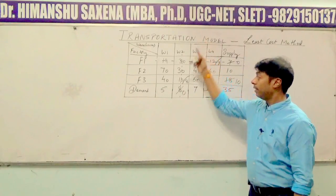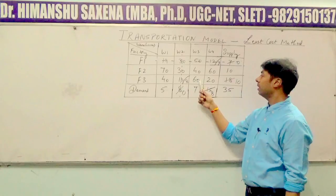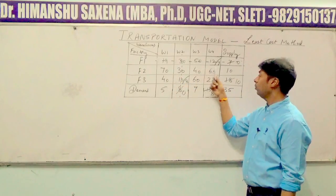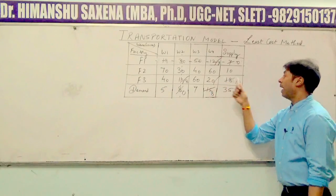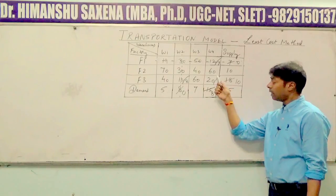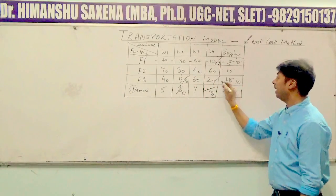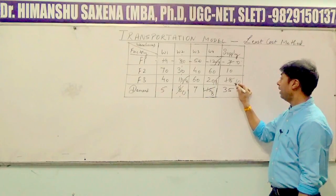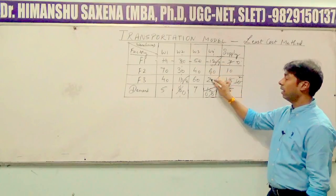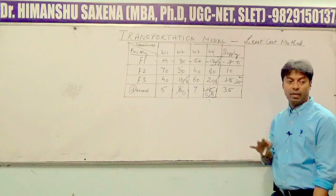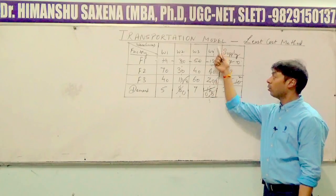We are now left with cost cells: 70, 40, 40, 60, 60, and 20. The next least cost cell is 20. The supply in front of it is 10 and the demand below it is 8, so the minimum value is 8. We allocate 8 units. Supply becomes 10 minus 8 equals 2, and demand becomes 8 minus 8 equals 0. Since the demand of W4 has turned 0, the entire column for warehouse 4 is deleted.